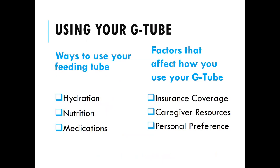Number one is insurance coverage — each patient's coverage may vary. Some formulas provided through a vendor are covered, sometimes there's an out-of-pocket cost. If that's a barrier, we want to know, and we can help navigate it and find financial assistance. Caregiver resources are another factor — for example, scheduling feedings around when a family member is available. Also personal preference: the G-tube is a tool, and you can use it as much or as little as you want depending on where you are in your disease and what your goals are.